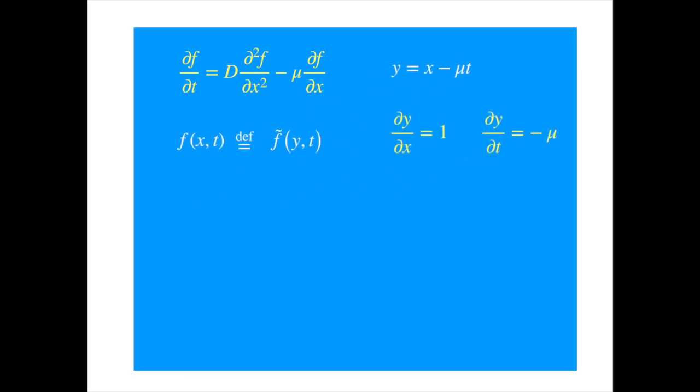Now we are ready to transform the differential equation. First let's transform the derivative with respect to x to the derivative with respect to the new variable y. We just use the chain rule. And as the derivative of y with respect to x is equal to 1, we get an identity. So the two derivatives are equal. The second derivatives will be equal as well then.